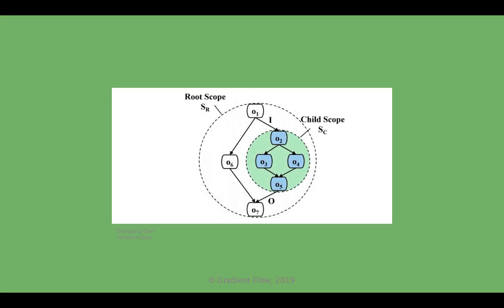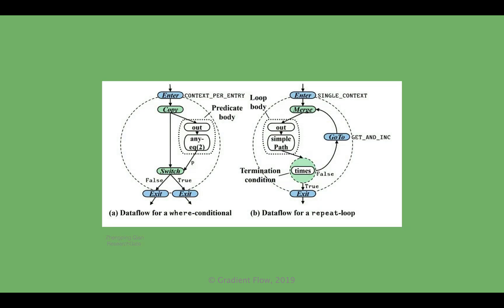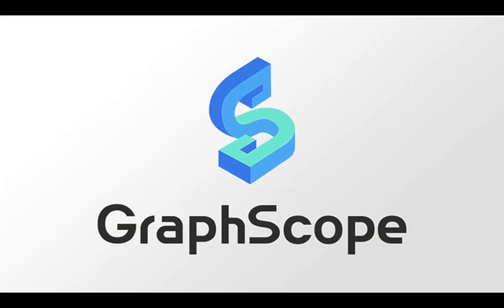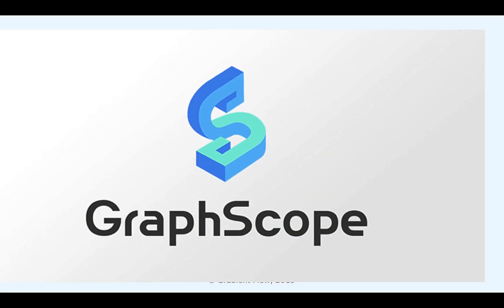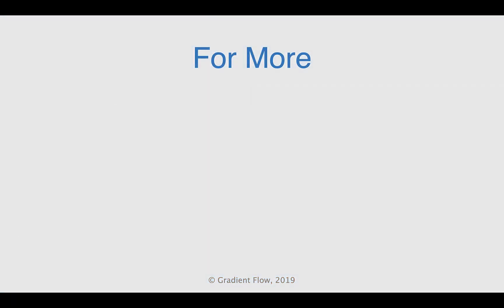In GraphScope, a scope is a Dataflow subgraph. The program uses scope abstraction to support the process of maintaining context information. The source code for GraphScope is available on GitHub. See Gradient Flow newsletter number 29 for more.